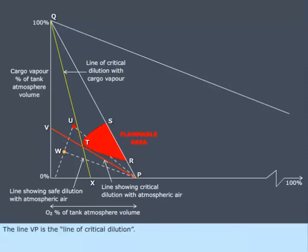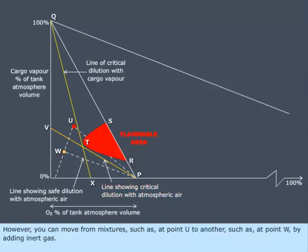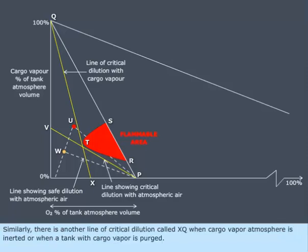The line VP is the line of critical dilution. However, you can move from mixtures such as at point U to another, such as at point W, by adding inert gas. Similarly, there is another line of critical dilution, called XQ, when cargo vapor atmosphere is inerted or when a tank with cargo vapor is purged.